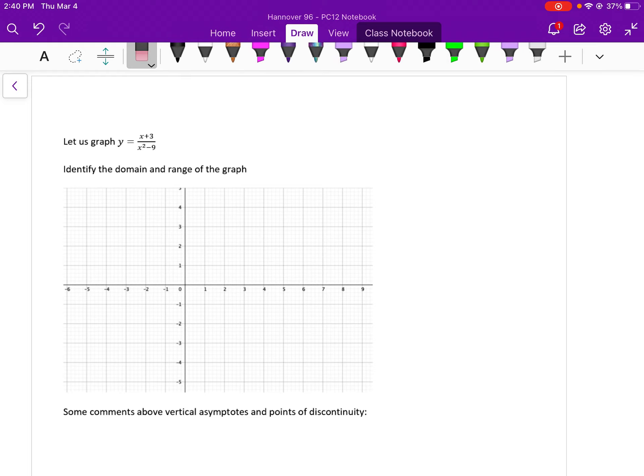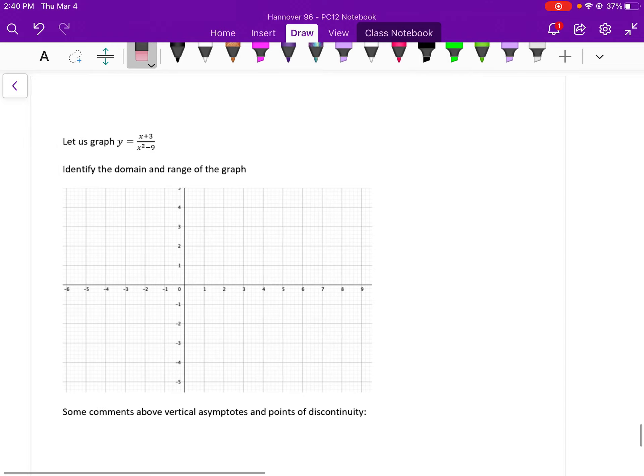So let us graph y equals x plus 3 divided by x squared minus 9. The first thing I would probably choose to do is factor the denominator. When I do, it's a difference of squares, every teacher's favorite. What I'm able to see is that I have two restricted values, that x cannot be equal to 3 or negative 3.